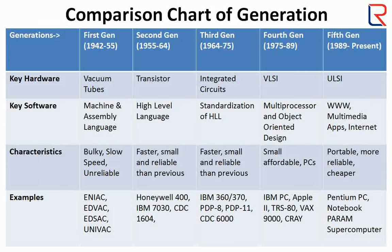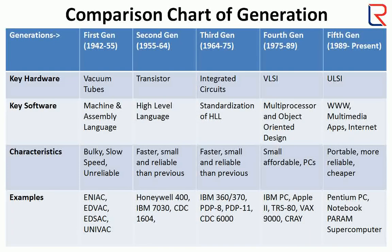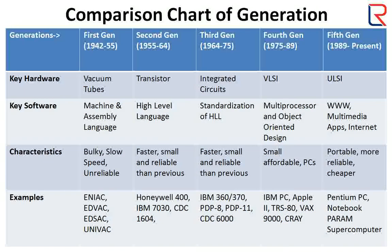Let's see the comparison chart of generations. Starting with hardware: first generation used vacuum tubes, second used transistors, third used integrated circuits, fourth used very large scale of integration, and fifth used ultra-large scale of integration. For key software: first used machine and assembly language, second used high level language, third had standardization of high level language, fourth had multiprocessor and object oriented design, and fifth has World Wide Web, multimedia apps, and internet.